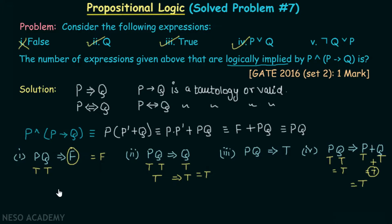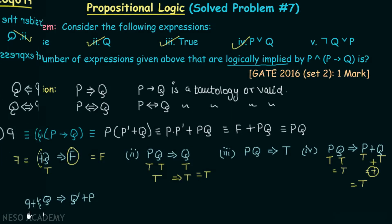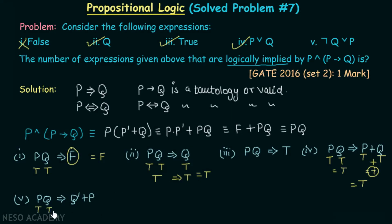Now the last expression: does pq logically imply NOT q or p? Taking p true and q true — since p is true, and true or anything is always true, NOT q or p is true. So this expression is also valid. Therefore, four expressions are logically implied by p AND (p implies q), and the answer to this question is four.